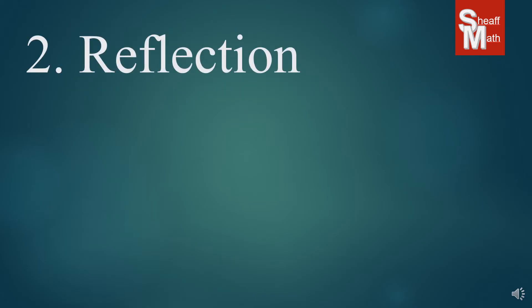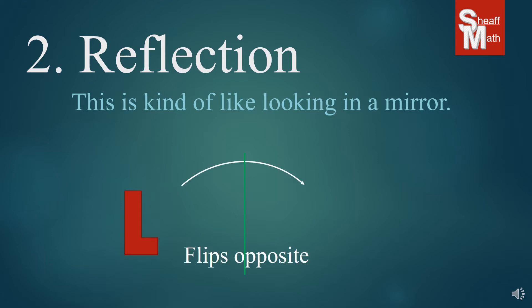The second transformation is reflection, and this is kind of like looking in a mirror. Again, not the most perfect mathematical term but easy to understand. So we have this L here and let's say this green line here is a mirror. When the L looks into the mirror, what does it see? It sees itself in the other side, but it's flipped opposite.